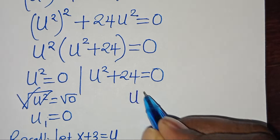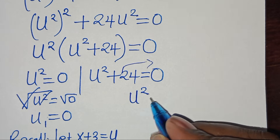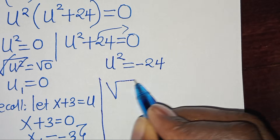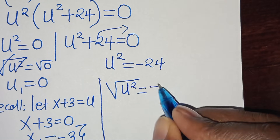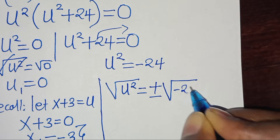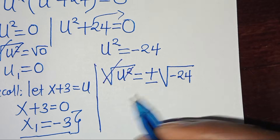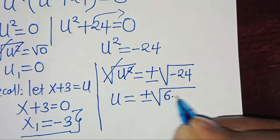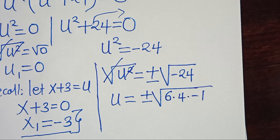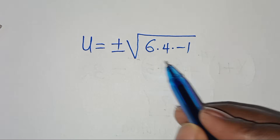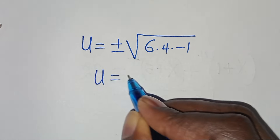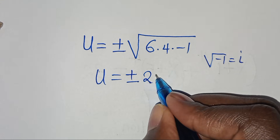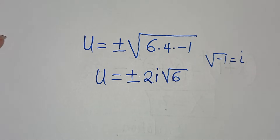For the second factor, u² + 24 equals 0, so u² equals minus 24. Taking the square root of both sides: u equals plus or minus the square root of minus 24, which is plus or minus the square root of 4 times 6 times minus 1, giving plus or minus 2i√6.